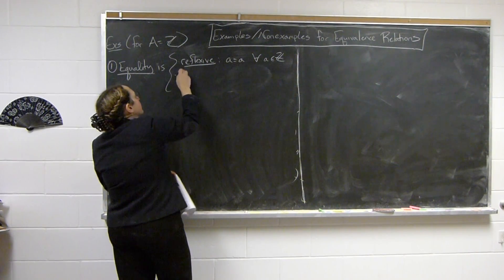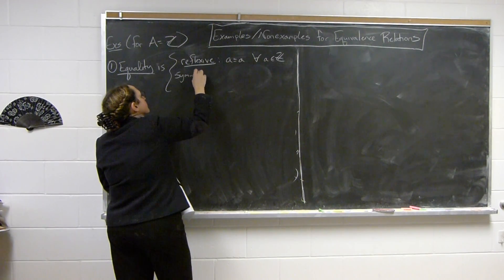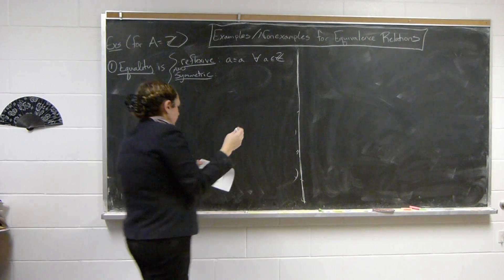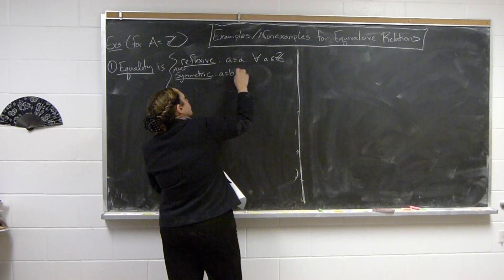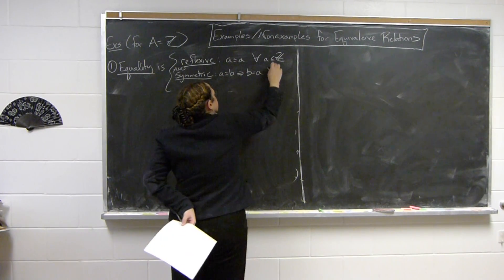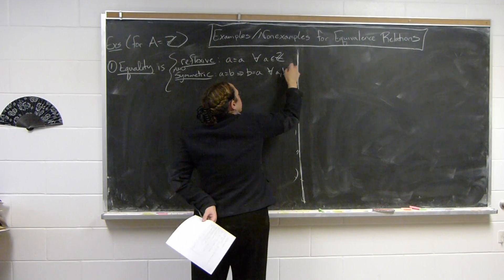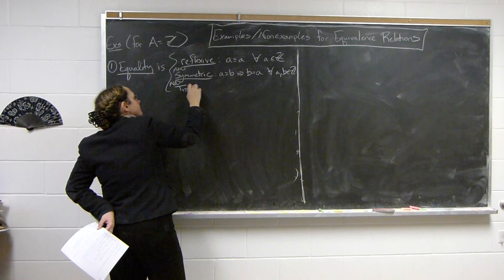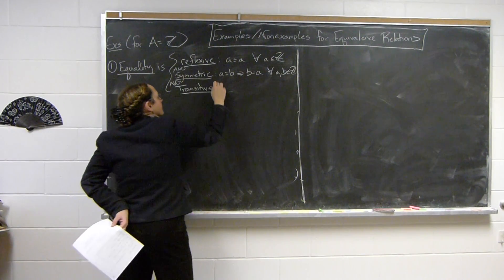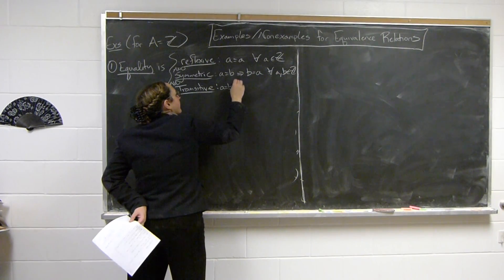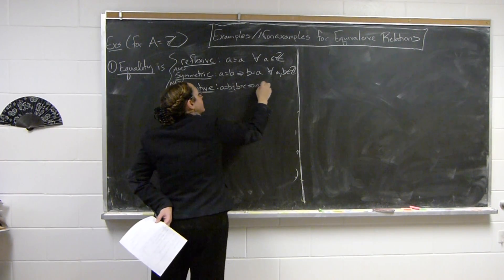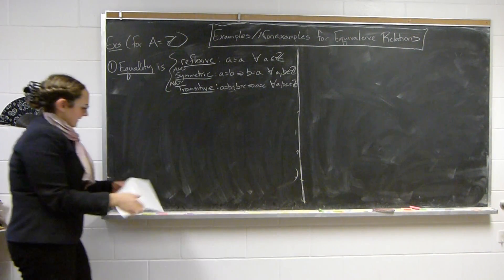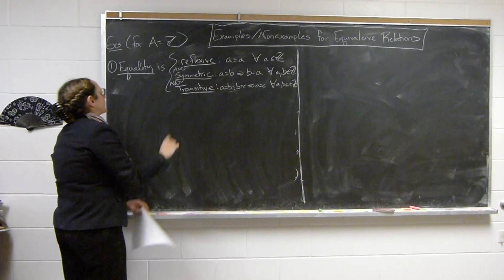It is symmetric, so A equals B implies B equals A for all integers A and B, and it is transitive. If A is equal to B, and B is equal to C implies A equals C for all A, B, C in the integers. So equality is an equivalence relation.